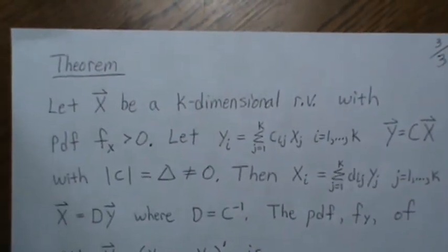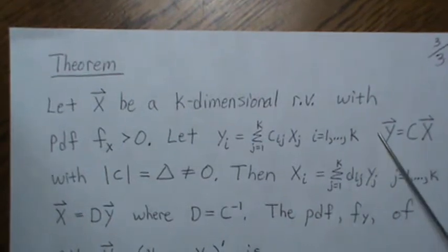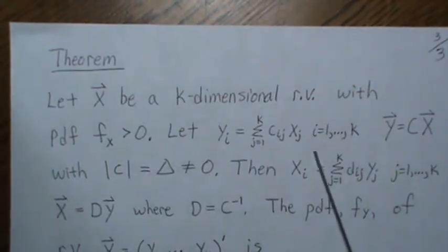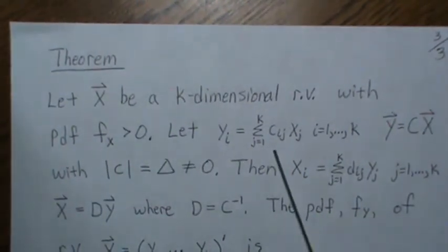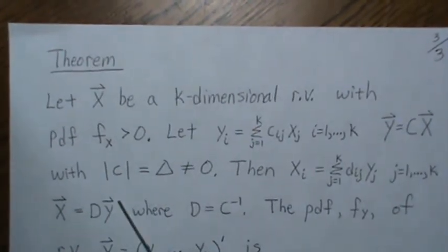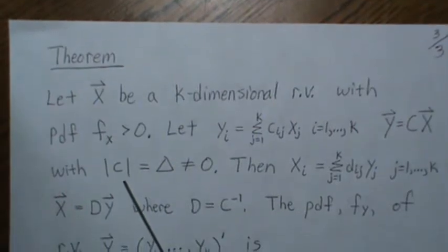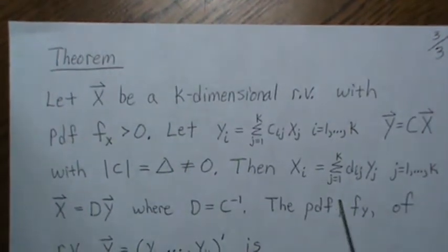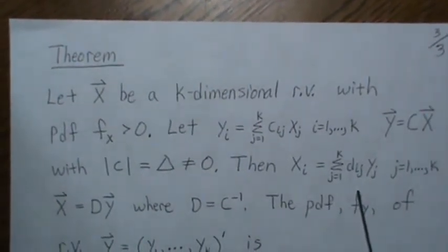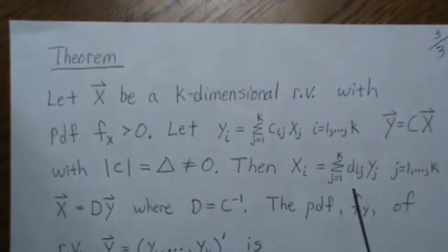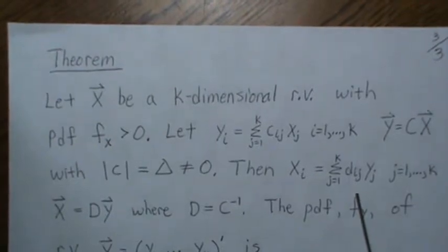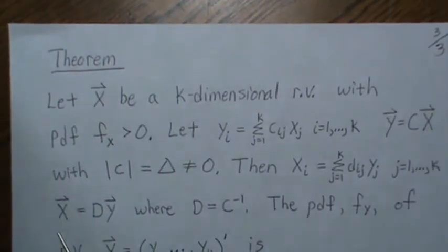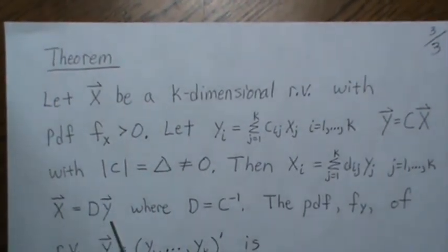Now to the main result — the theorem to find the distribution of Y. Let X be a k-dimensional random vector with PDF f(X) greater than zero, and let Y be this linear transformation represented in matrix form as Y = CX. Let delta be the determinant of C. When you back-solve for X_i you get this transformation, where the D elements represent the entries of C inverse.